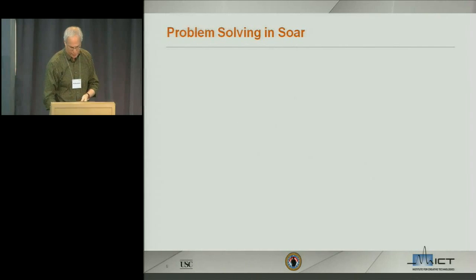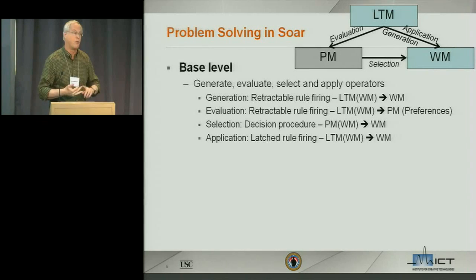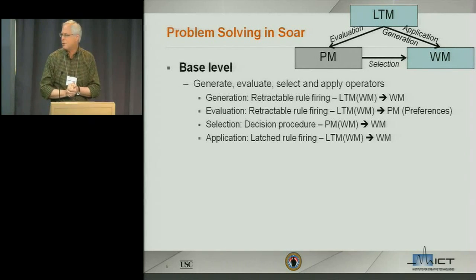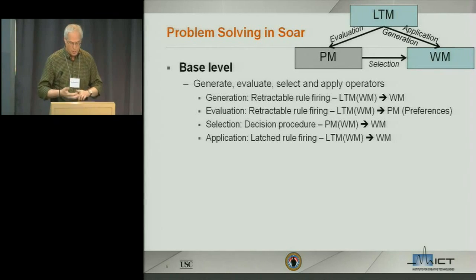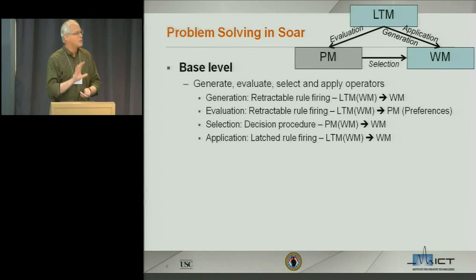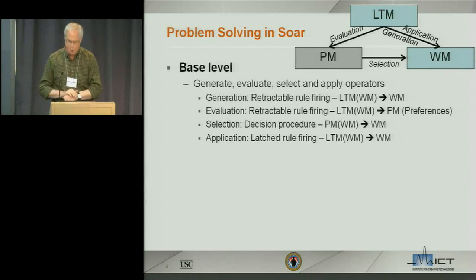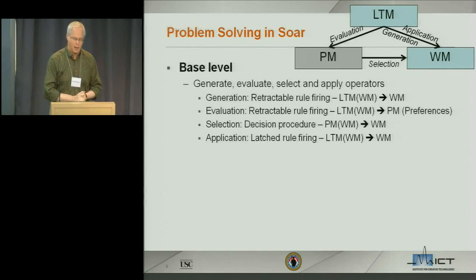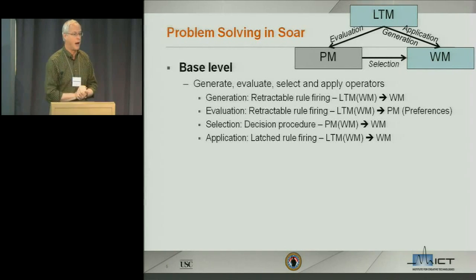Here's a brief intro to problem solving in SOAR. It's based on three memories and four processes. You've seen two memories before: long-term memory and working memory. There's also a preference memory that usually doesn't show up in architectural diagrams but is critical for problem solving. Then there are four processes; three are driven by rule firing: generation, evaluation, and application. Generation and evaluation occur in a retractable fashion like a TMS, so they're always sensitive to the current situation. Application occurs by latched rule firing. Decisions occur by taking results from preference memory and applying a separately implemented decision procedure.